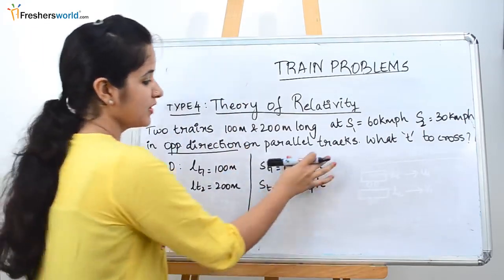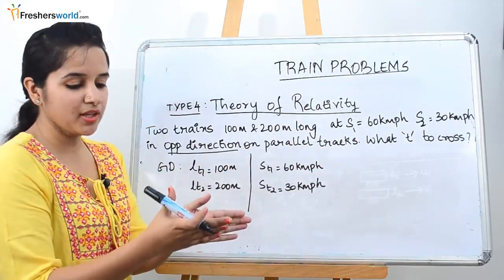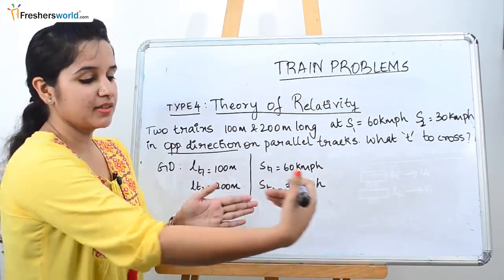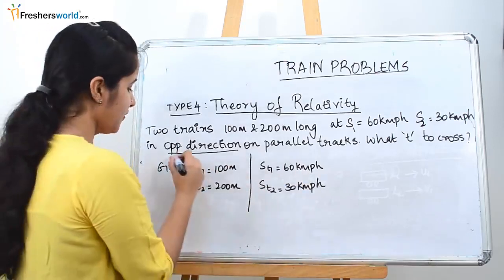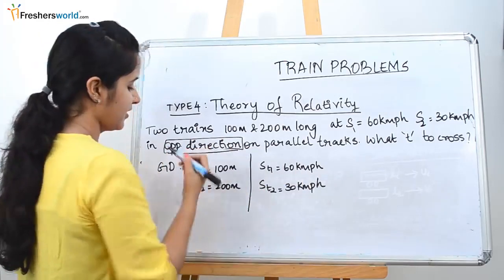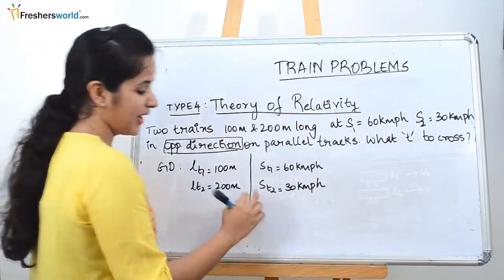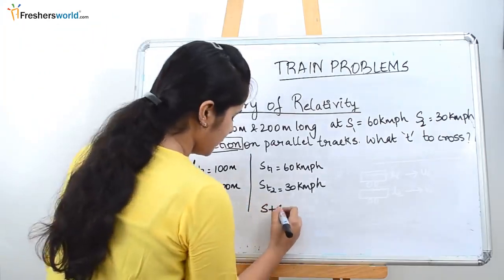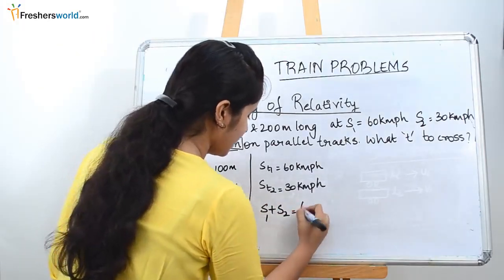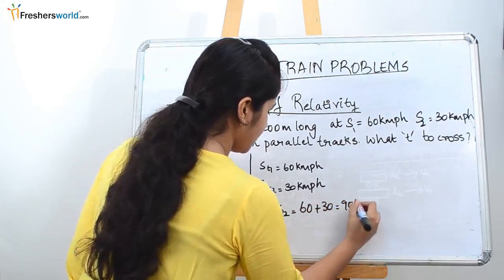People get confused with the parallel tracks. Parallel tracks means they are going on parallel tracks but coming in the opposite direction. Since it is opposite direction, we know that we have to add the speeds. So S1 plus S2, which is 60 plus 30, equals 90 kilometers per hour.